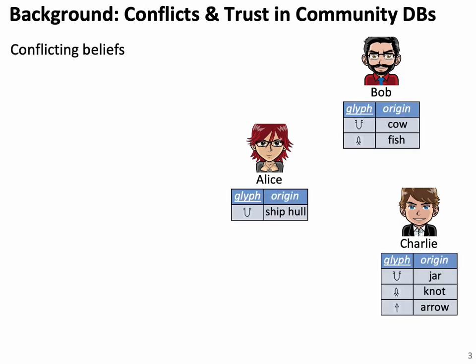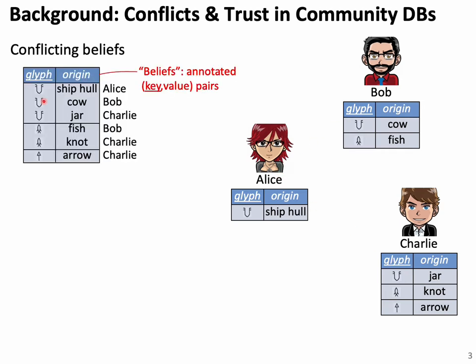We can model disagreement of beliefs with the help of key violations. Alice, Bob, and Charlie have their own individual databases and they may disagree on certain keys. Here we have keys and values. For the same key — this particular symbol — Alice, Bob, and Charlie have different values.